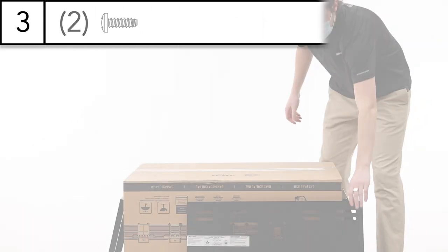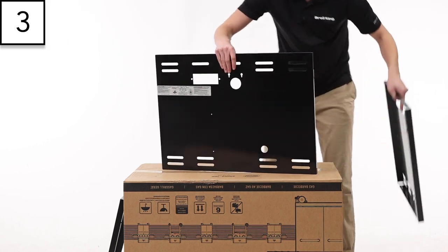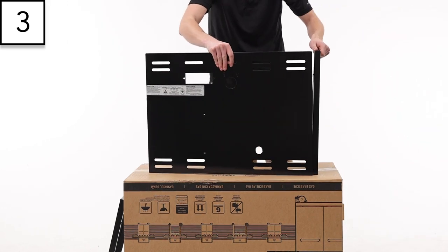Step 3: Align the two side panels with the rear panel. Slide the rear panel into place and tighten the four screws with your screwdriver.